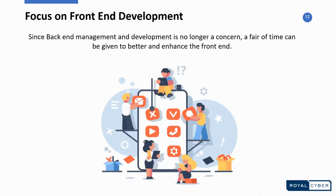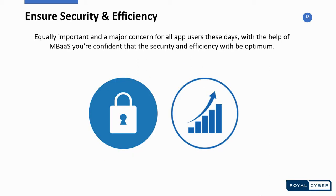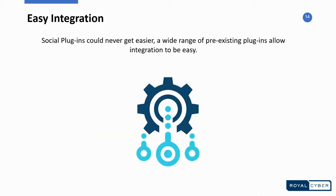Since you don't have to focus on back-end — that's covered — you have a lot of time to focus on the front-end to enhance it and make it much better. All app users these days need to make sure that the application is secure and efficient, and that's exactly what Mobile Backend as a Service does. You can be confident that security and efficiency will be optimum. And last but not least, social plugins could never get easier — a wide range of pre-existing plugins allow integration to be very easy.